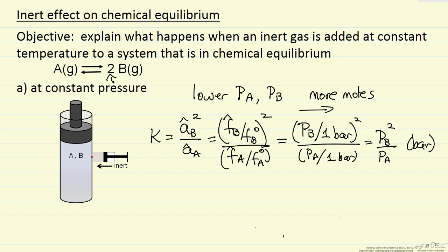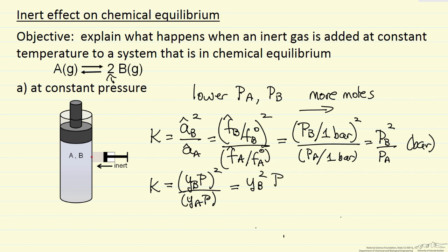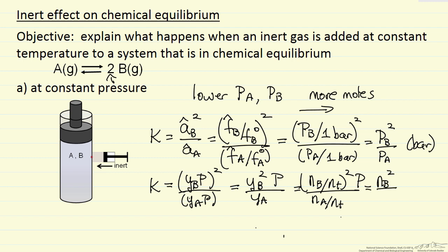To make it easier to visualize, let's write this in terms of mole fractions. The partial pressure of B is mole fraction of B times total pressure, and likewise for A. So we have mole fraction of B squared times total pressure, over mole fraction of A times total pressure. Substituting moles over total moles for each mole fraction, we get: number of moles of B squared, over total number of moles, times number of moles of A, times pressure.